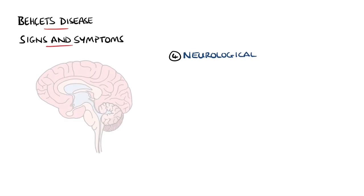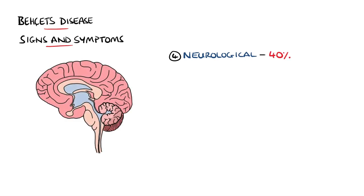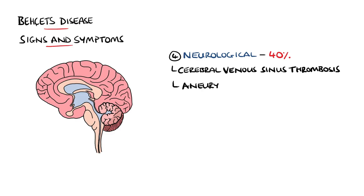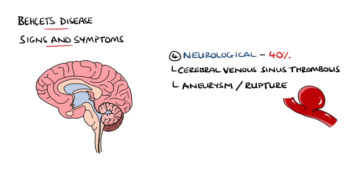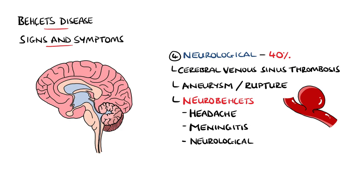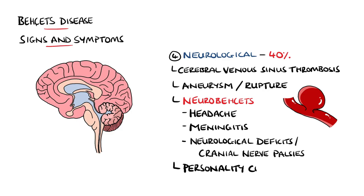Neurological involvement is seen in around 40% of cases and contributes significantly to morbidity. Cerebral venous sinus thrombosis may be seen, and aneurysms of the central nervous system arteries may also rupture. When the brain parenchyma is involved, this is considered neurobehçet's disease, which typically presents with an acute onset of symptoms such as headache, meningitis, or neurological deficits including cranial nerve palsies. Personality changes are also possible.